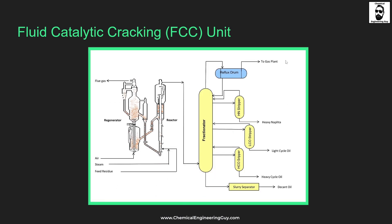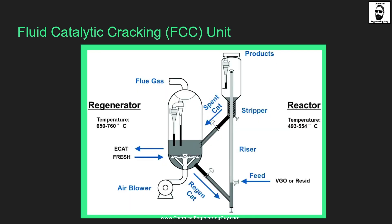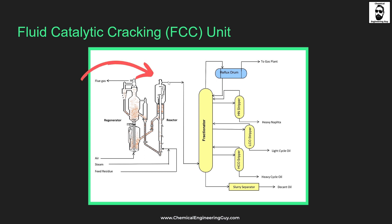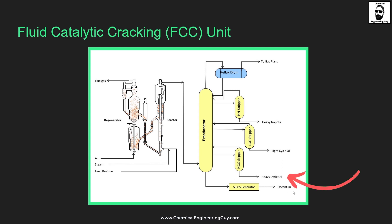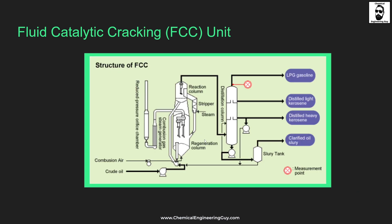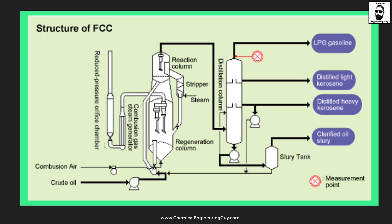Here's another example. What I want to show you is that these products go to the fractionator — the products get split into gases, heavy naphtha, light cycle oil, heavy cycle oil, and heavy oils — essentially gasolines, diesels, jet fuels, and lube oils. Another example: we have the reactor, reduced pressure chamber, the regeneration column, the stripper, and the steam stream. We have initially air and the heavy cut, then the distillation column which delivers gases, kerosene, heavy and light kerosene fractions, and finally the slurry.